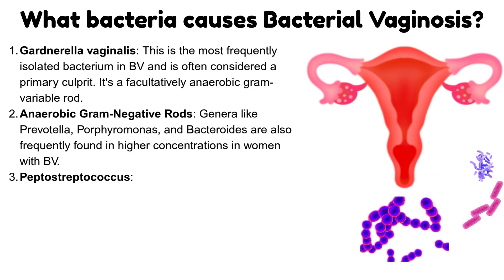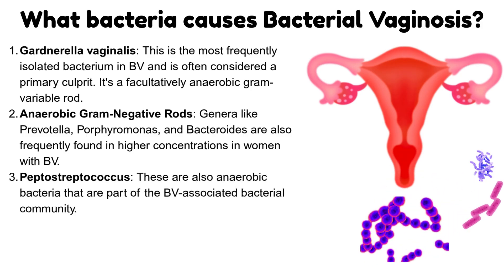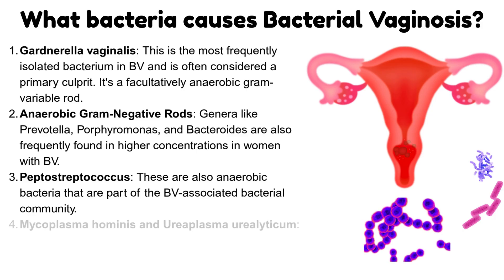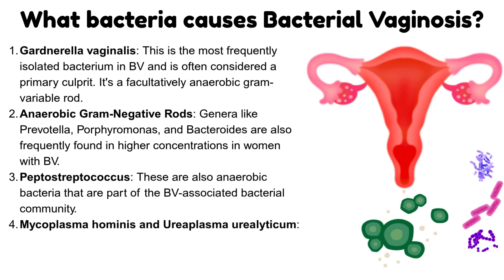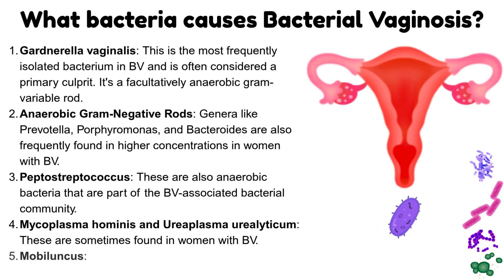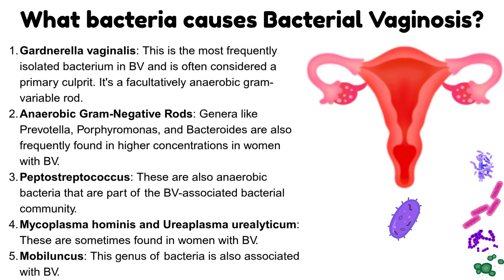Peptostreptococcus — anaerobic bacteria that are part of the bacterial vaginosis-associated bacterial community. Mycoplasma hominis and Ureaplasma urealyticum are sometimes found in women with bacterial vaginosis. Mobiluncus is another genus of bacteria also associated with bacterial vaginosis.